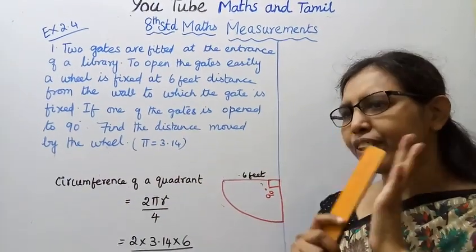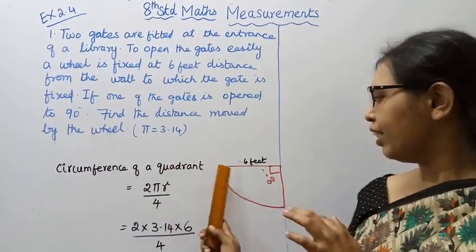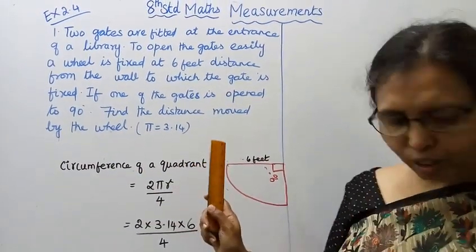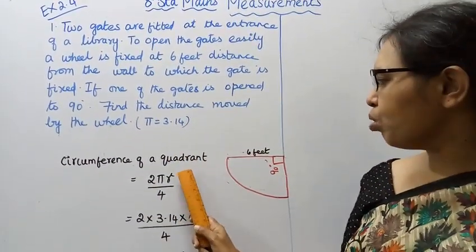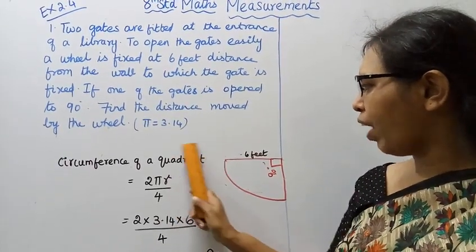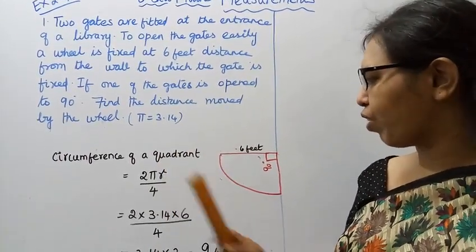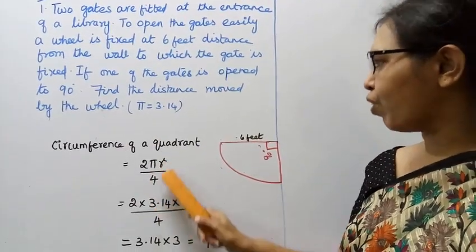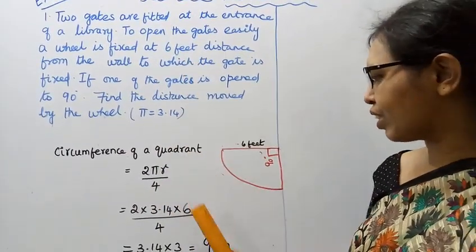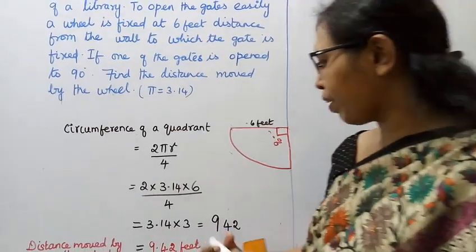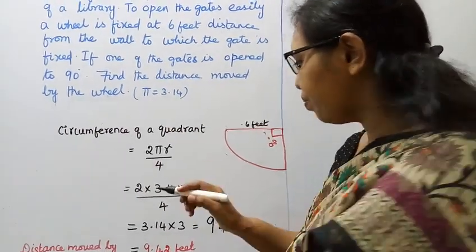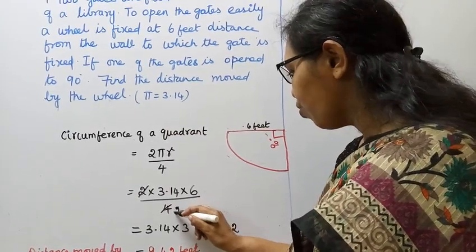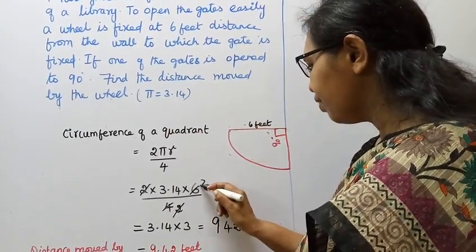The circumference of a circle is 2πr. Here we have to find the quadrant. The circumference of a quadrant is 2πr/4. Here the radius r is 6 feet, so we have: 2π(6)/4 = 2 × 3.14 × 6 / 4 = 3.14 × 3.